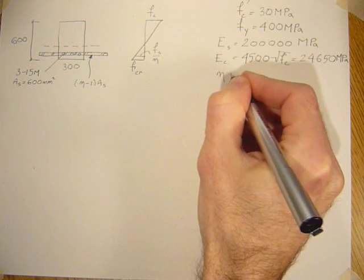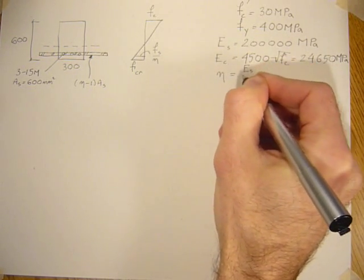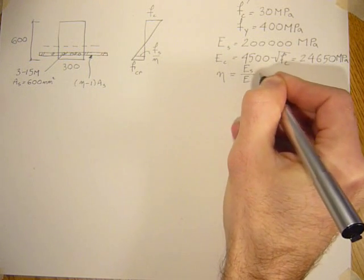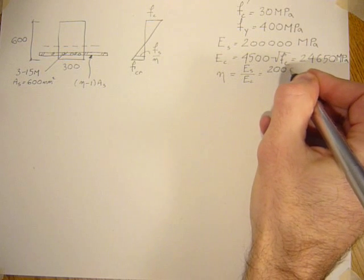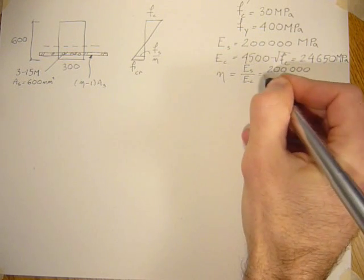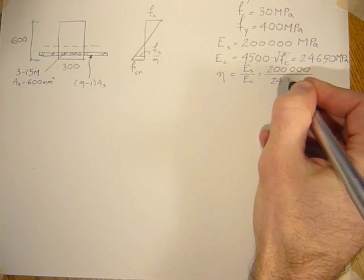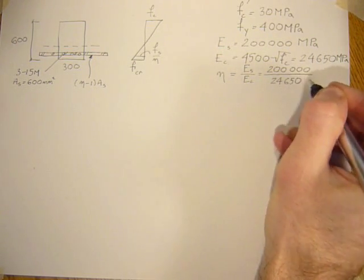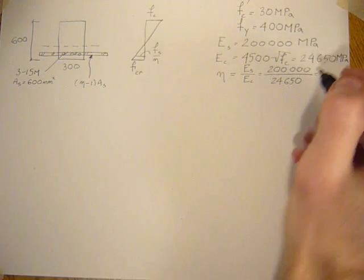So the n value is just the ratio of the E of the steel over the E of the concrete, which is 200,000 divided by 24,650. And that's 8.11.